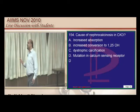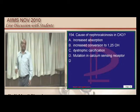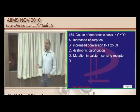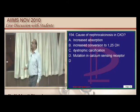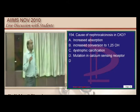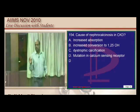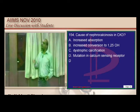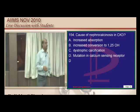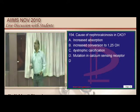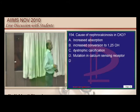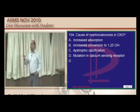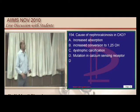Nephrocalcinosis in chronic kidney disease: there is an abnormal calcium sensing receptor which causes retention of calcium, leading to the development of nephrocalcinosis in chronic kidney disease.